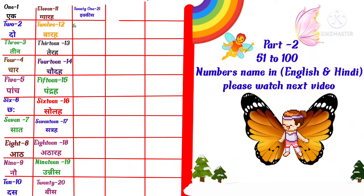T-W-E-N-T-Y T-W-O, 22 means twenty-two. T-W-E-N-T-Y T-H-R-E-E, 23 means twenty-three.